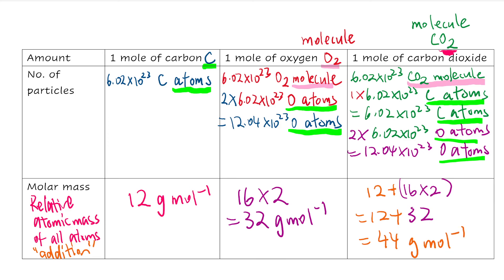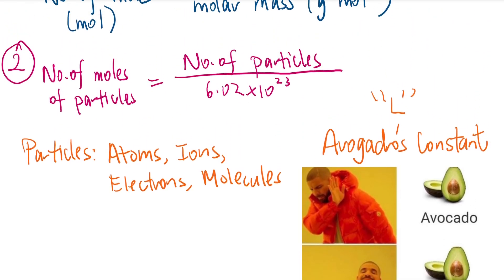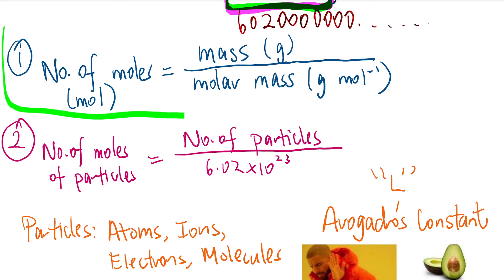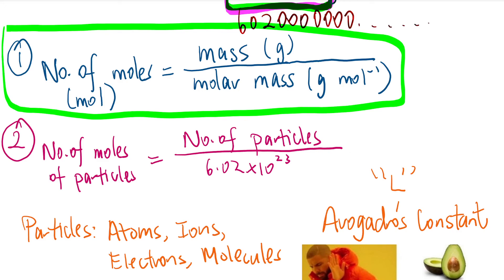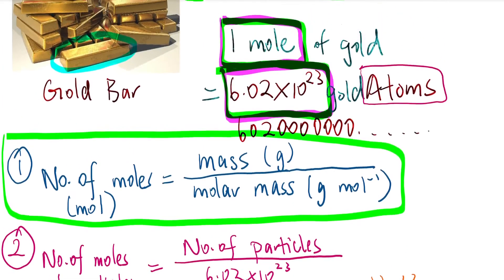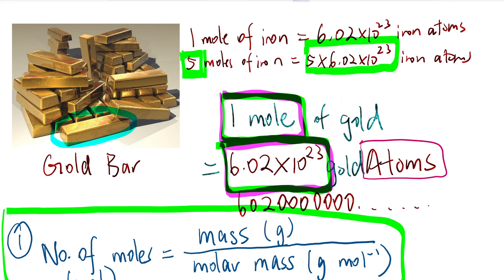So this is the relationship of the mole with Avogadro's number — you can represent it in atoms, molecules, or ions. The main formula to remember is: number of moles = mass ÷ molar mass, which we'll be using in the coming videos. Also remember: the number of moles of anything, you multiply by Avogadro's number 6.02 times 10 to the power 23. That's it for this video — see you in the next one!